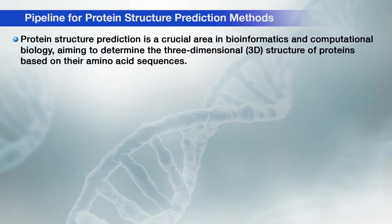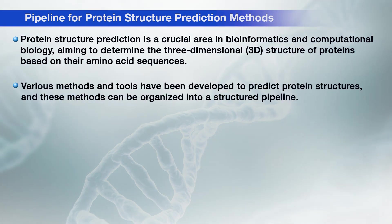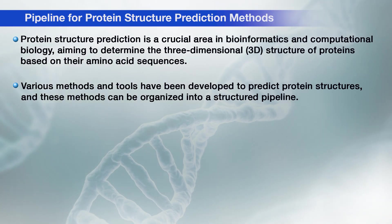Protein structure prediction is a crucial area in bioinformatics and computational biology, aiming to determine the 3-dimensional structure of proteins based on their amino acid sequences. Various methods and tools have been developed to predict protein structures and these methods can be organized into a structured pipeline. In this lecture we will understand the overall outline of a typical pipeline for protein structure prediction, highlighting the key steps and methodologies involved.